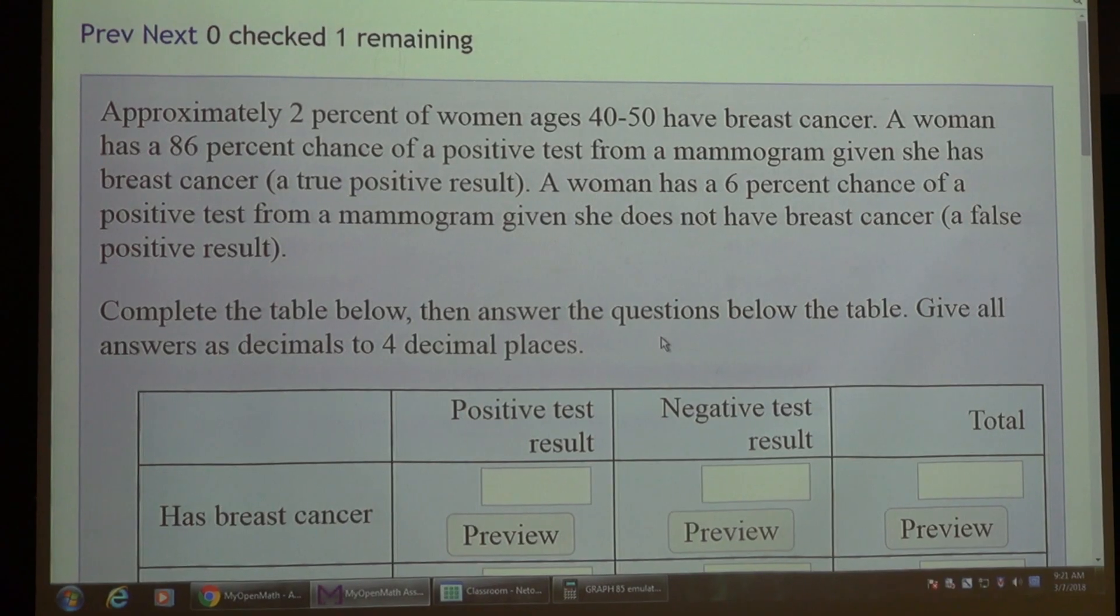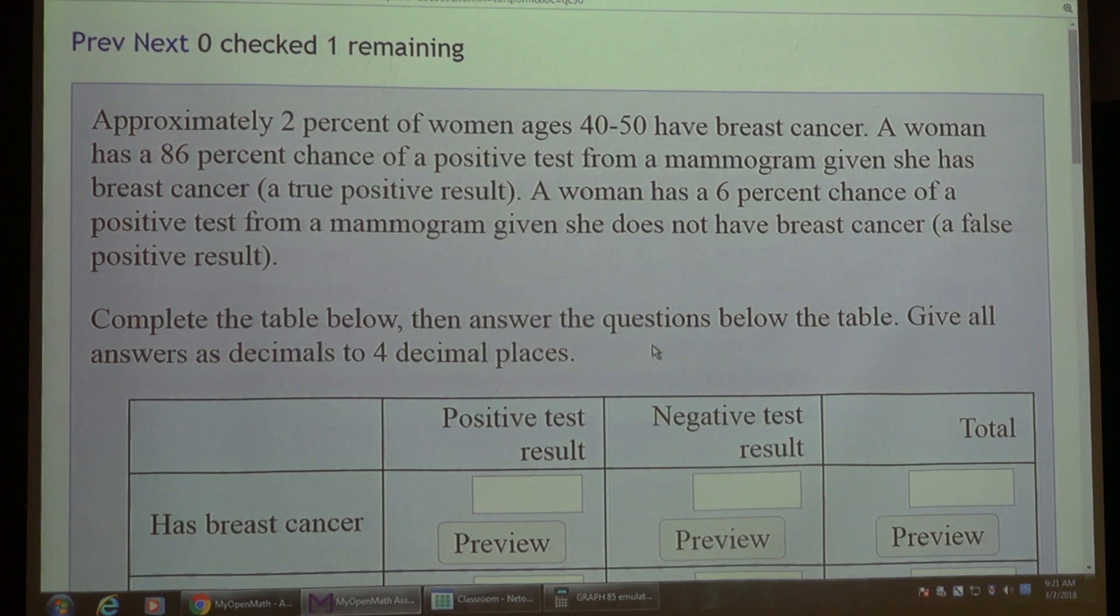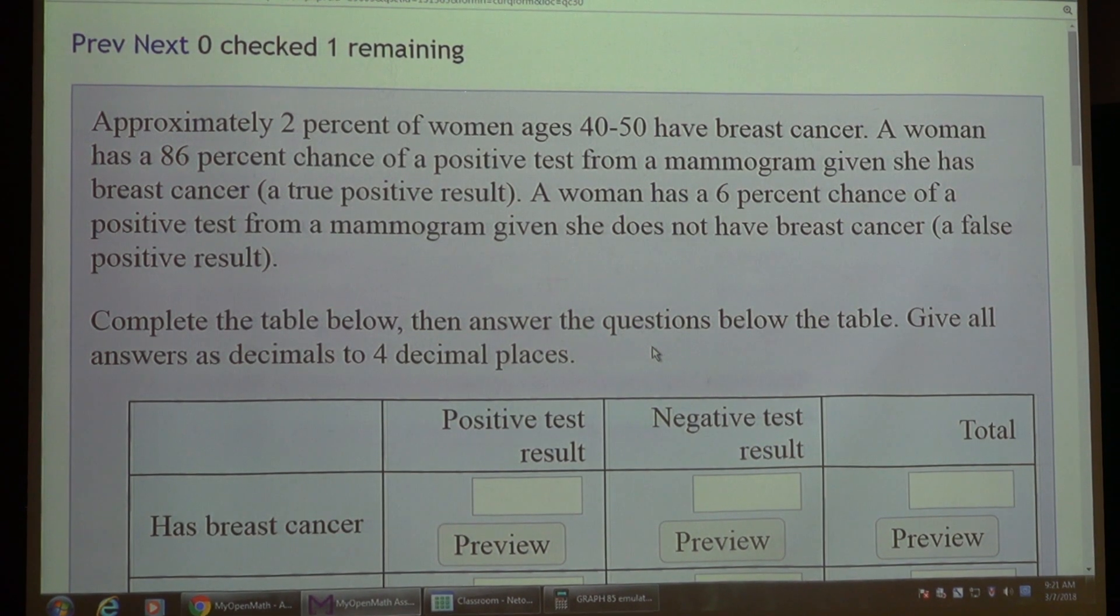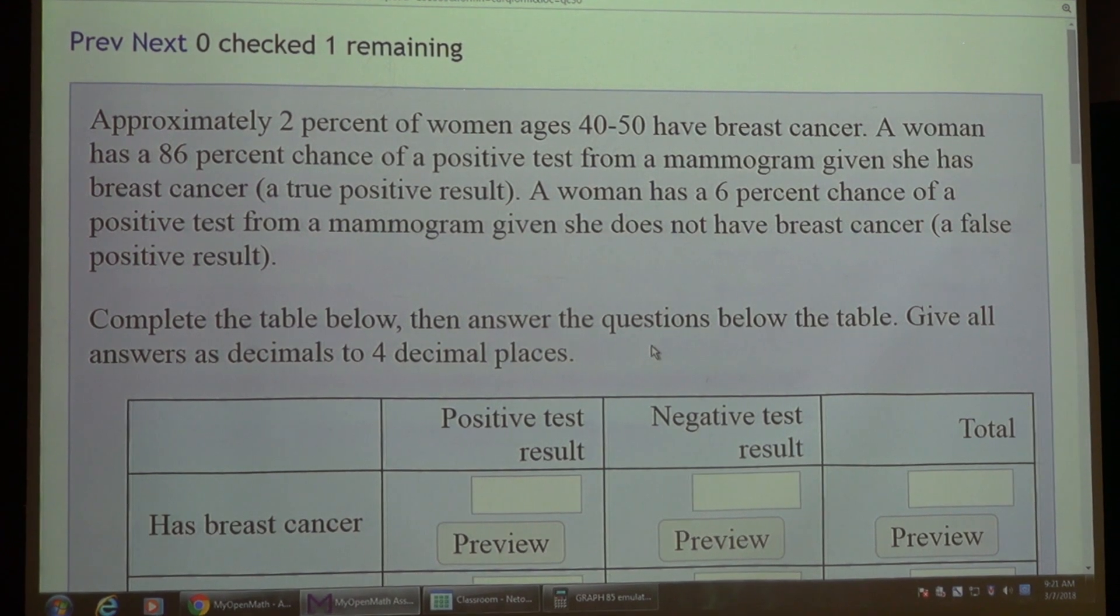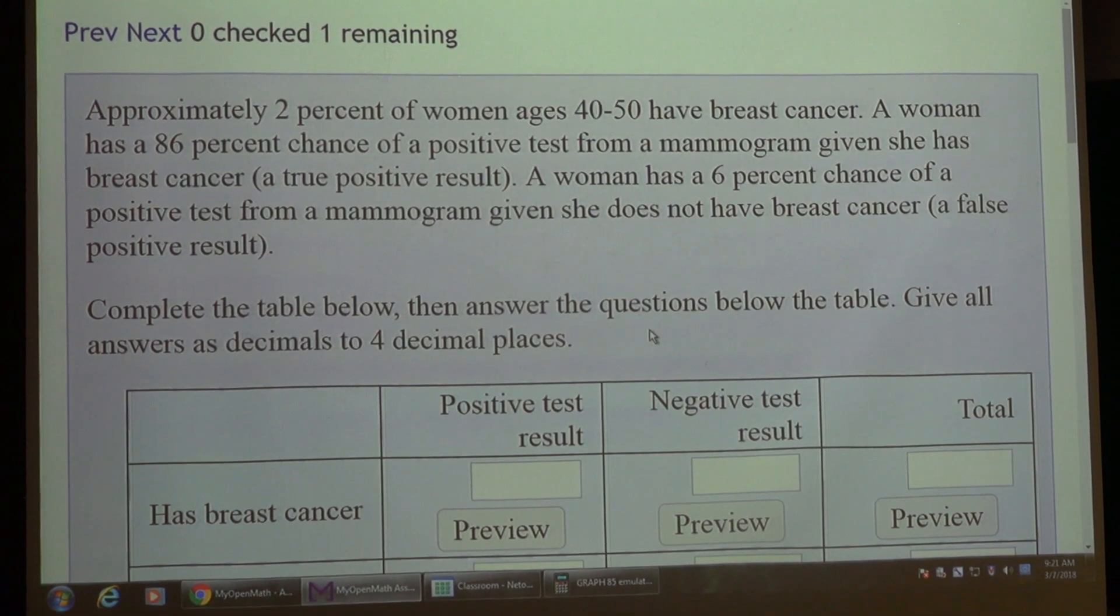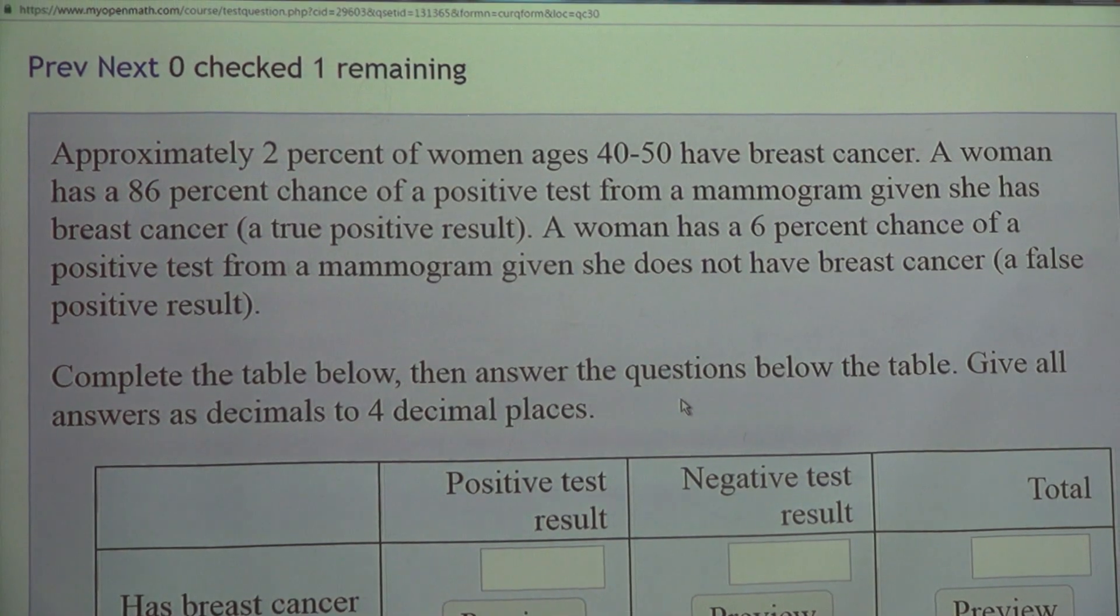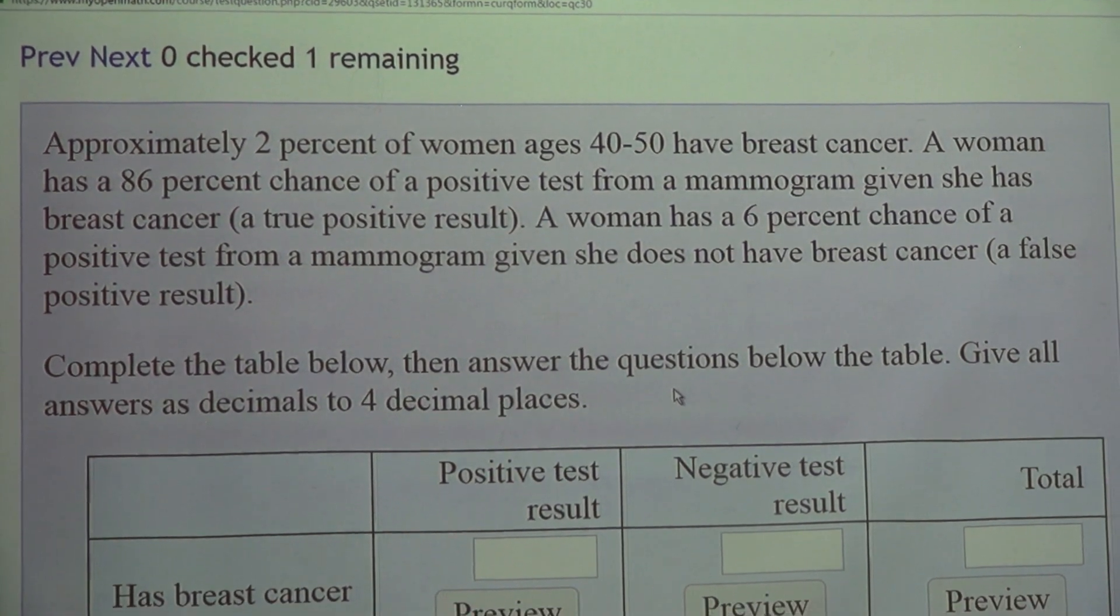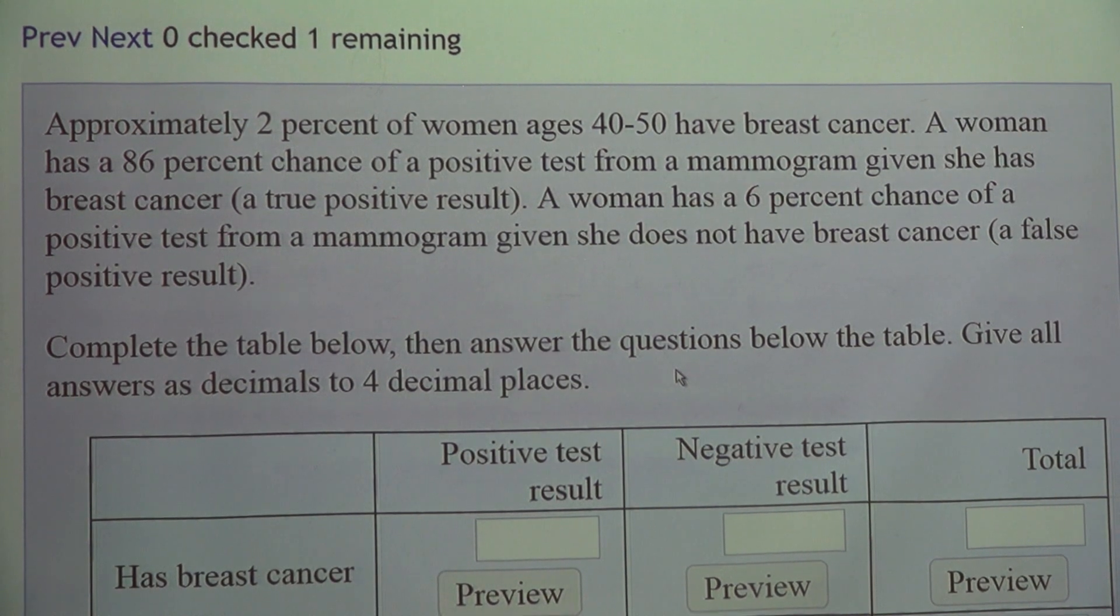On this problem it says approximately 2% of women age 40 to 50 have breast cancer. A woman has an 86% chance of a positive test from a mammogram given she has breast cancer. That's called a true positive result. A woman has a 6% chance of a positive test from a mammogram given she does not have breast cancer. That's called a false positive result. From this we're supposed to complete this table and do the question at the bottom of it.